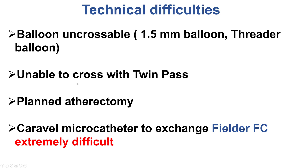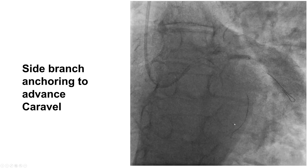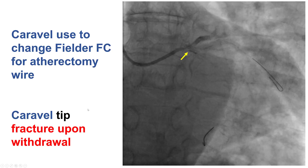In this particular case, we could not get a Threader or a small balloon across. We tried advancing a TwinPass to place a second wire, but this was not successful. We then considered atherectomy and advanced the Caravel microcatheter to exchange the Fielder FC wire for an atherectomy wire. However, we could not advance the Caravel much past the proximal part of the lesion, even when using a side branch anchoring technique in an attempt to advance the microcatheter.